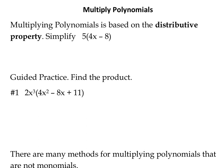Multiplying polynomials is all based off of using the distributive property. If we look at an example of the distributive property, we've got 5 times the quantity 4x minus 8. If we recall our order of operations, first we want to simplify inside, but we can't — 4x and minus 8 aren't like terms. But we can distribute: multiply 4x times 5 and negative 8 times 5. So 5 times 4x is 20x, minus 5 times 8 is 40, simplifying to 20x minus 40.